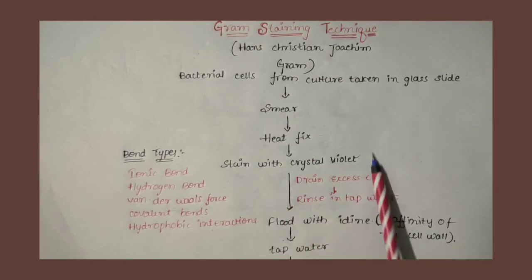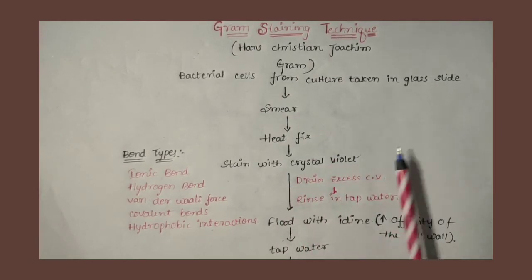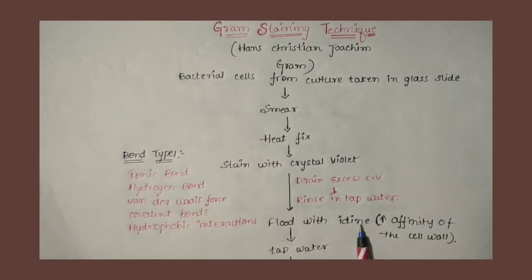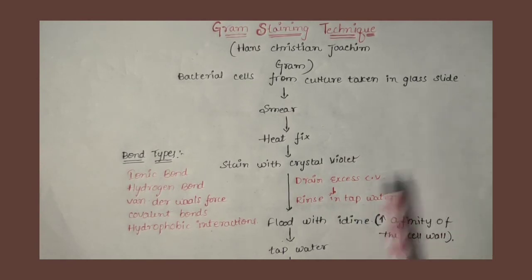So after crystal violet, we remove excess crystal violet under the tap water. After that we are adding iodine to the slide. Iodine increases cell wall affinity.